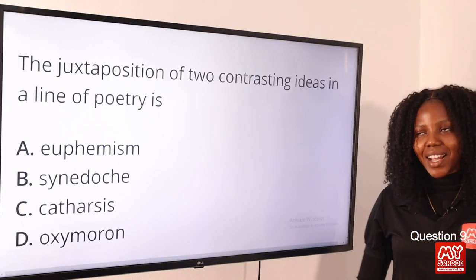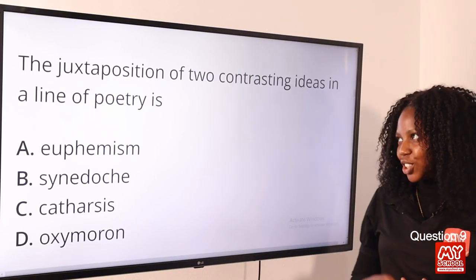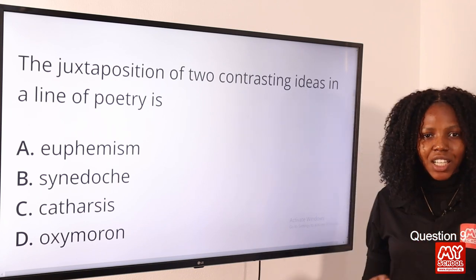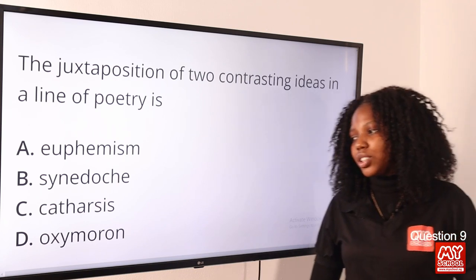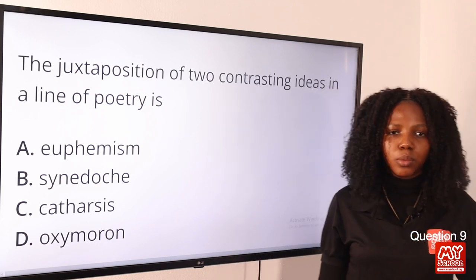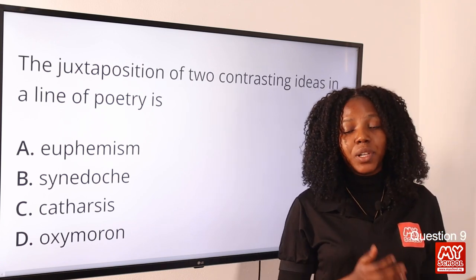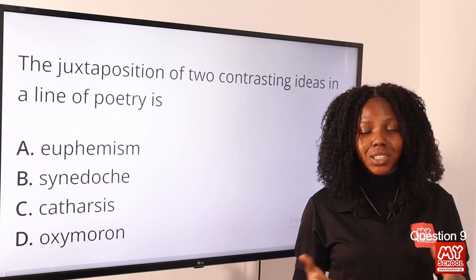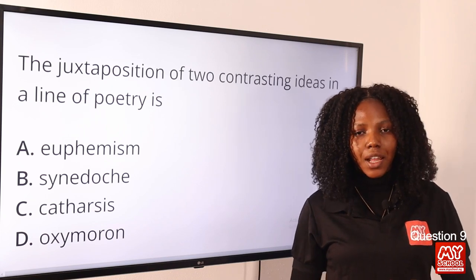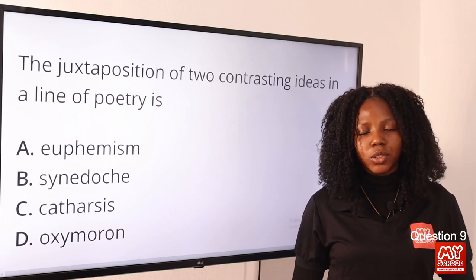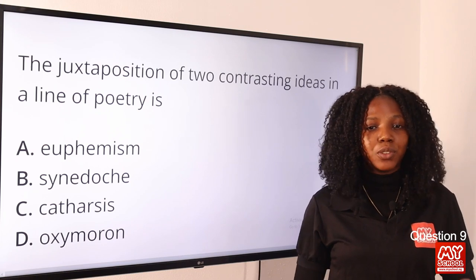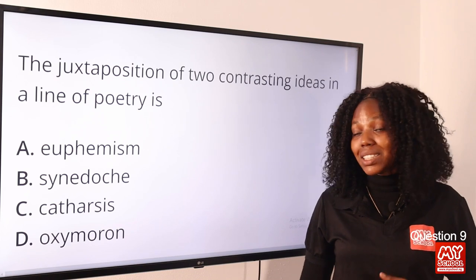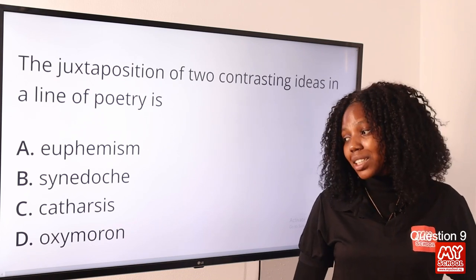Question 9: The juxtaposition of two contrasting ideas in a line of poetry is — the answer is oxymoron. Oxymoron places side by side two contradicting words that are opposite in nature, like 'ugly' and 'beautiful.' For example, describing someone as 'beautifully ugly' is an oxymoron. The answer is option D, oxymoron.